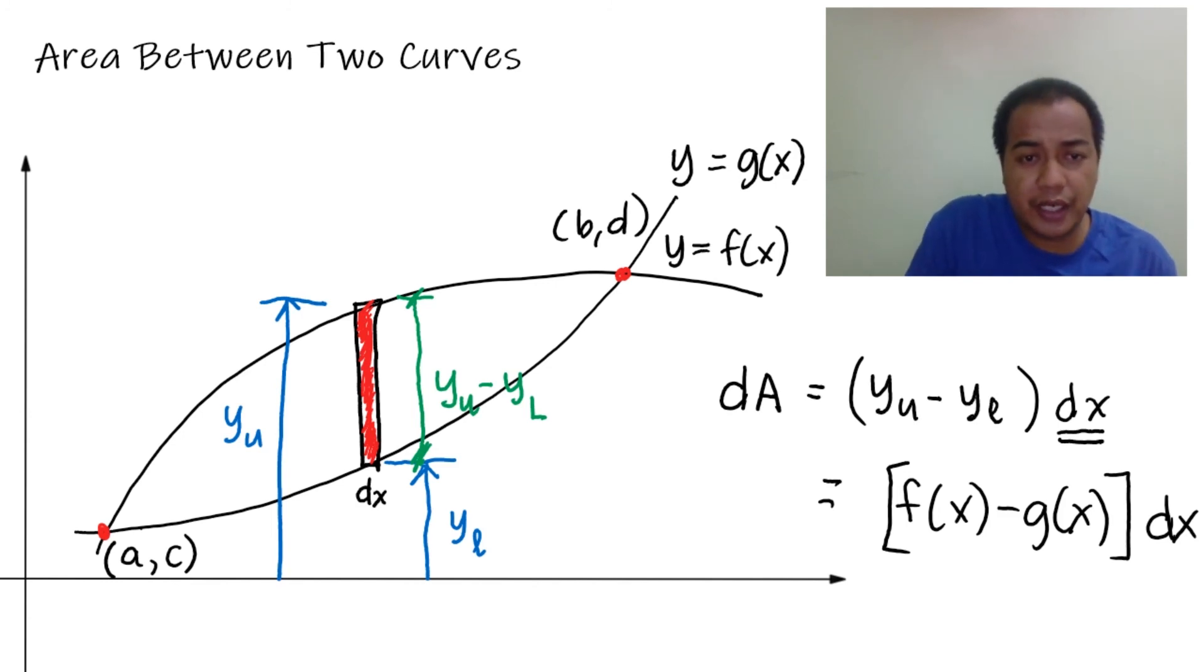Now, this rectangular element, we need to sweep from this point up to this point. X is equal to A here and X equals B here. So we need to sweep this rectangular element from A to B. When we integrate, that's the total area between the two curves.